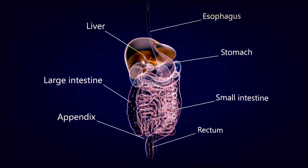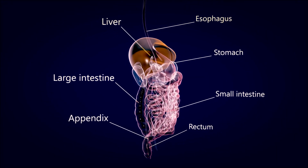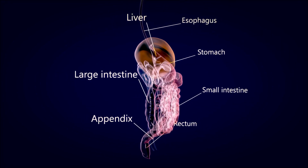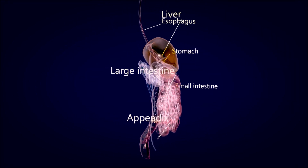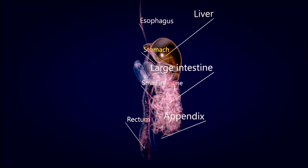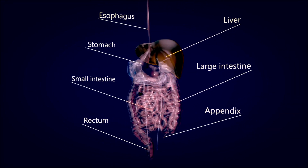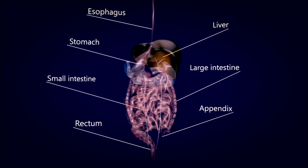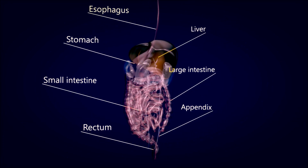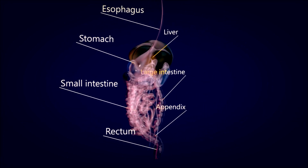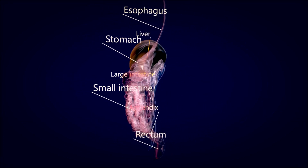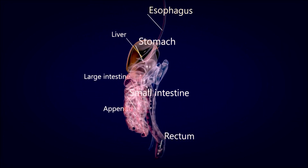Now that we have explored the different parts of the digestive system, it's crucial to remember that they all work together harmoniously, like a well-coordinated team, to ensure optimal digestion and absorption of nutrients.